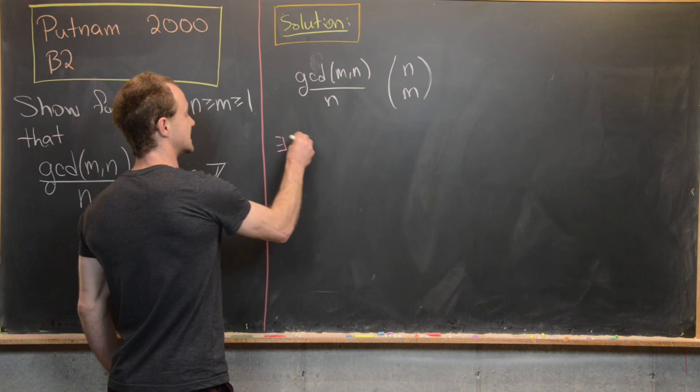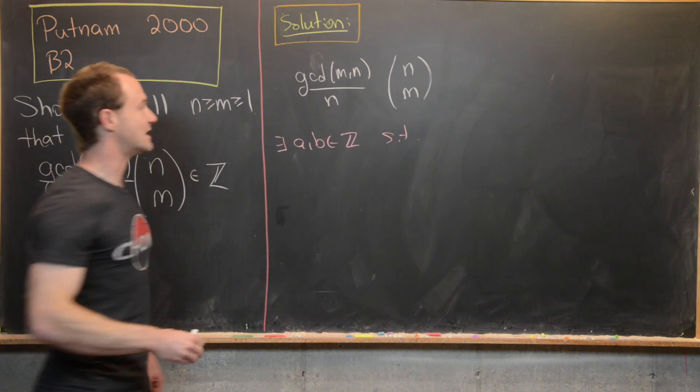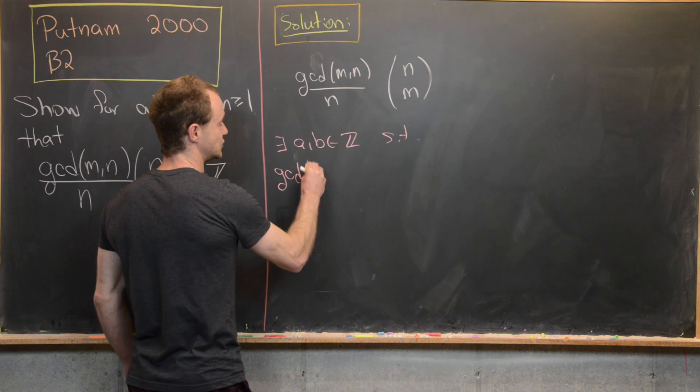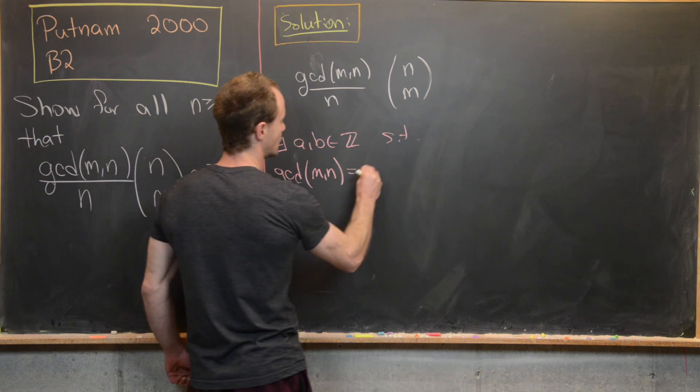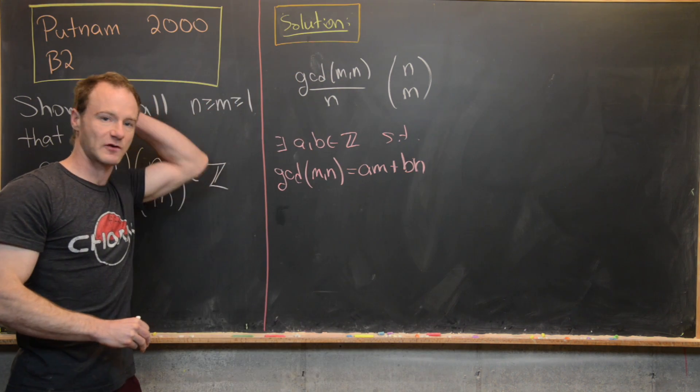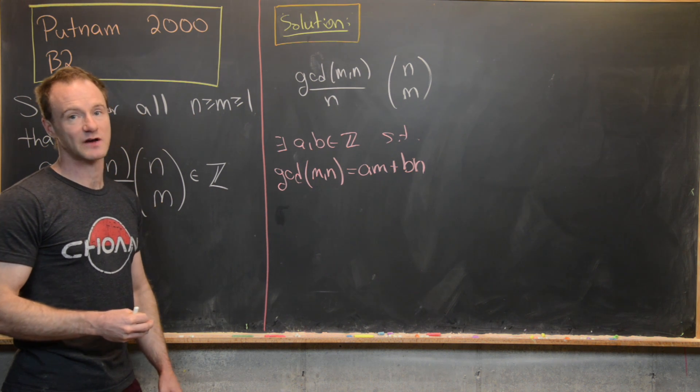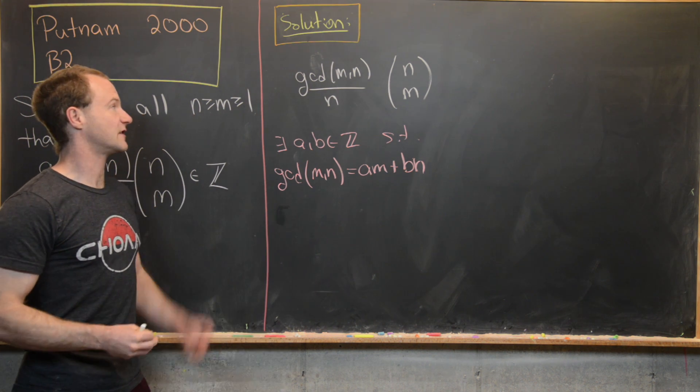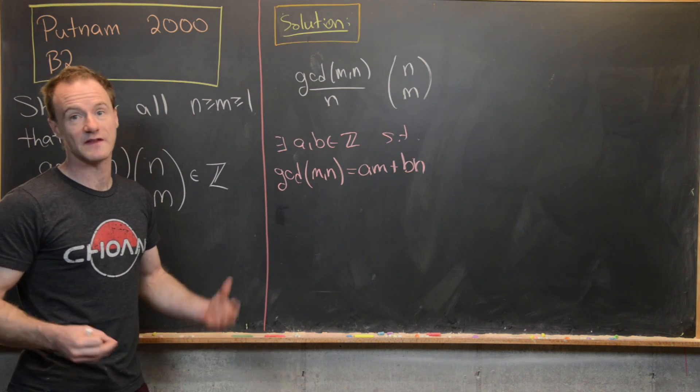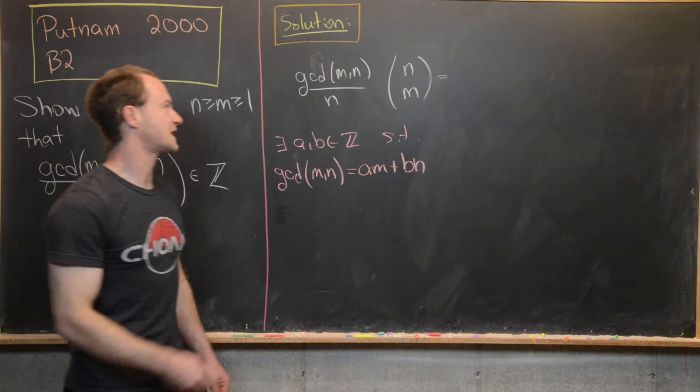And that tells us that there exist integers a and b such that the gcd of m and n can be written as a linear combination of m and n. In other words, we have gcd(m,n) = am + bn. So this is a standard fact from elementary number theory. And many, many, many times when you're doing these problem-solving type exams involving the GCD, you'll use this kind of expression to rewrite that GCD in terms of a linear combination. And that will help you out with simplification.